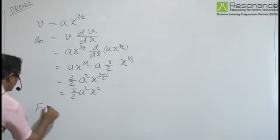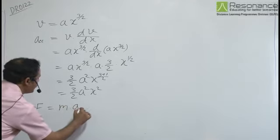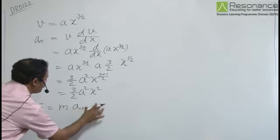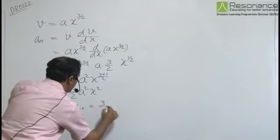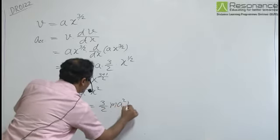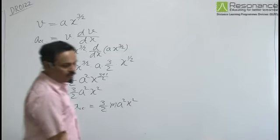The force on the particle is mass times acceleration, which equals 3/2 MA² X². This is the force.